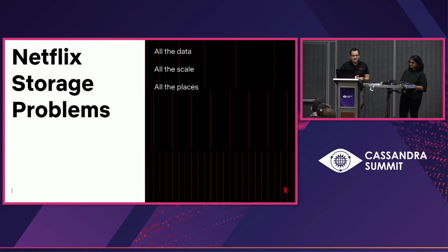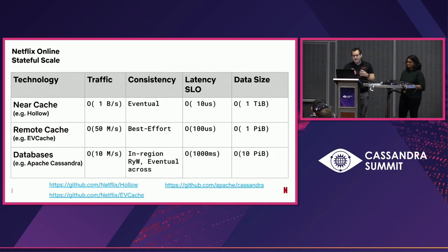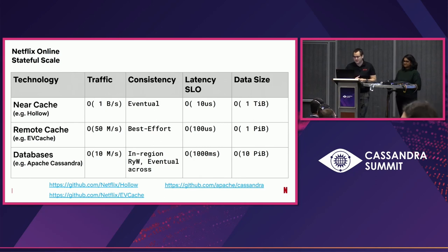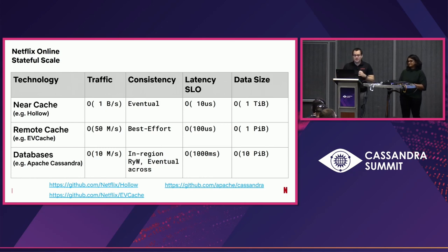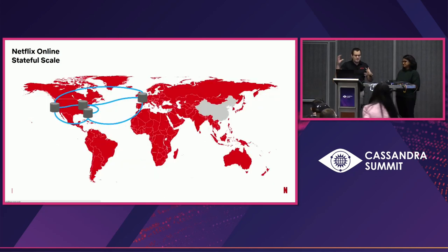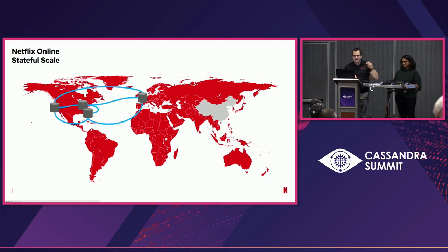To put it succinctly, we have all the data at all the scale in all of the places. Specifically, we handle tens of millions of requests per second to our databases and billions of requests per second in caching layers, all using open source storage engines with varied latency SLOs, different amounts of data and traffic. When you spread your data across four Amazon regions with three availability zones each — 12 copies of data to keep consistent at all times — serving the whole planet, this is a pretty challenging problem.